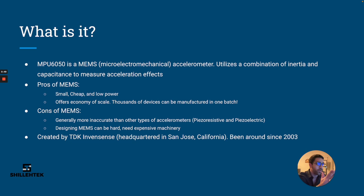However, the cons of MEMS is they're generally more inaccurate than other types of accelerometers - for example, piezoresistive and piezoelectric accelerometers, which use the piezoelectric effect and the piezoresistive effect. For those who don't know, the piezoelectric effect is: if you put pressure on a material it will produce some voltage or charge. For piezoresistive, if you put pressure on a material it'll actually change the resistance of that material. Other accelerometers use those effects. It's more sophisticated and more expensive to get such material, so that's why it's typically more expensive.